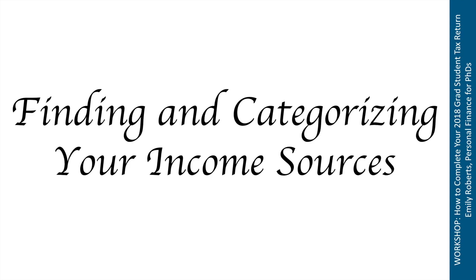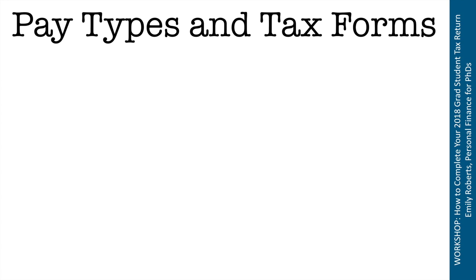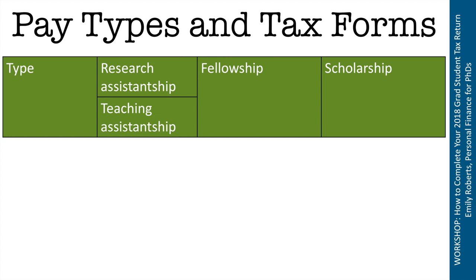As the title states, you're going to find and then categorize into one of two categories your grad student income sources. There are three types of pay that you may receive as a graduate student, and I'm going to explain the tax forms associated with each of those types so you know what to look out for. The three types are assistantships, fellowships, and scholarships.